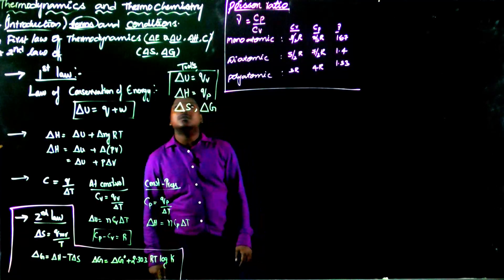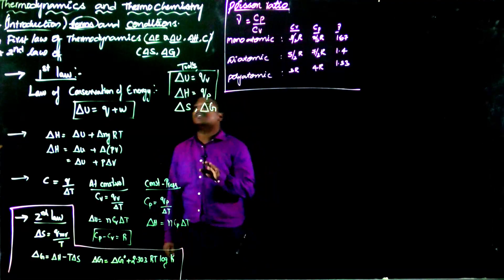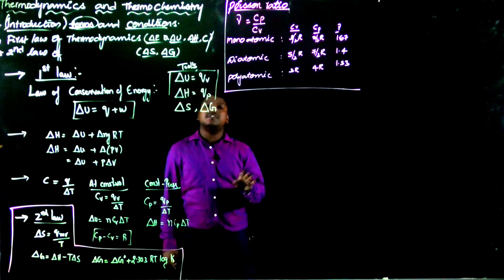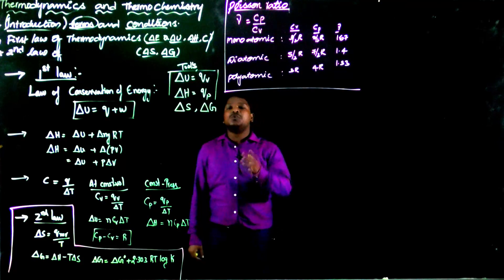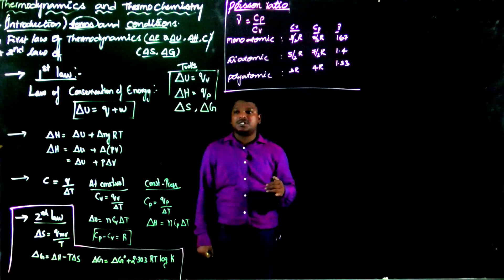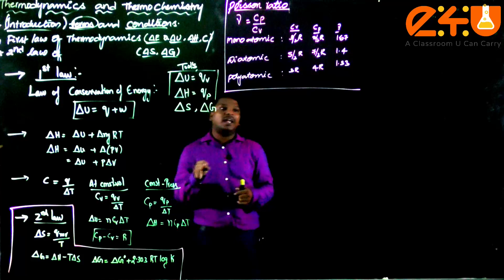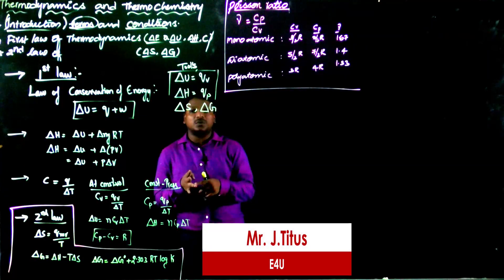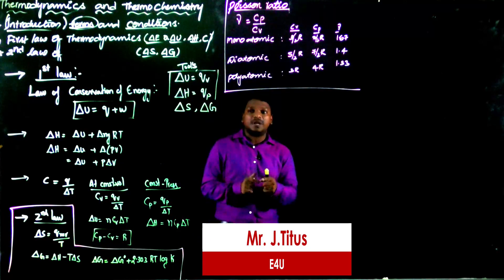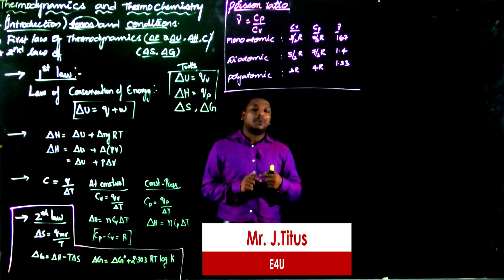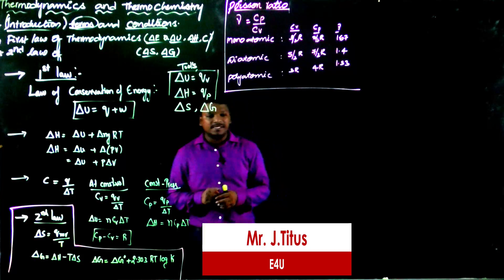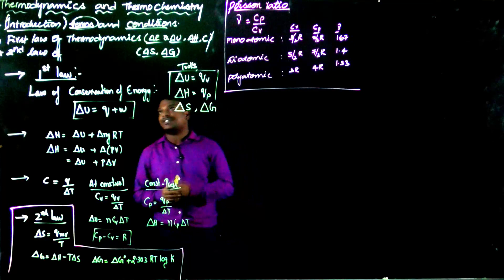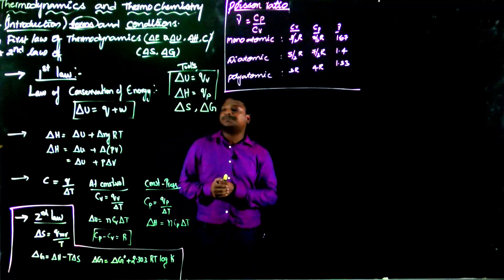In the previous video we studied all the terms involved in thermodynamics. Whenever you learn any physical chemistry chapter, first revise atomic structure, chemical bonding, mole concept, and all states of matter — solid, liquid, gas — then come to thermodynamics. Thermodynamics is used to find out whether a process is spontaneous or non-spontaneous, equilibrium finds the extent of the reaction, and kinetics finds the speed of the reaction.